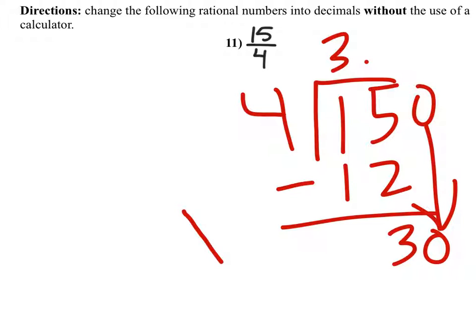Then you'll subtract. Then you'll see what number 4 can go into 30. And 4 can go into 30 at 28, which would be 7. That would be 2.